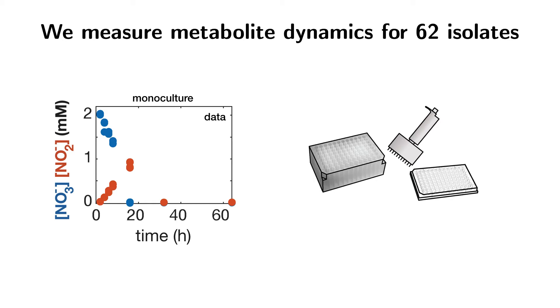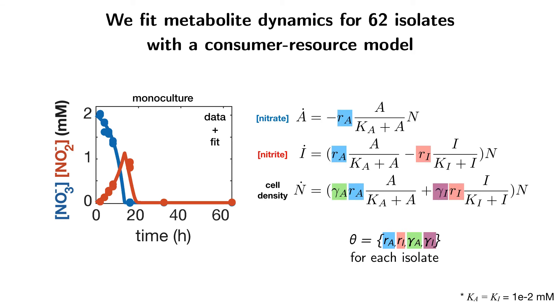To parameterize and make sense of these dynamics, we fit them to a simple consumer resource model, which resembles the Monod model for microbial growth on a substrate. In this case, there are two substrates: nitrate (A) and nitrite (I). The dynamics are characterized by four key parameters. RA and RI are the rates of consumption of nitrate and nitrite respectively, and gamma A and gamma I are the yields on nitrate and nitrite.